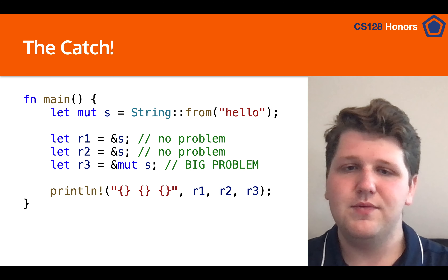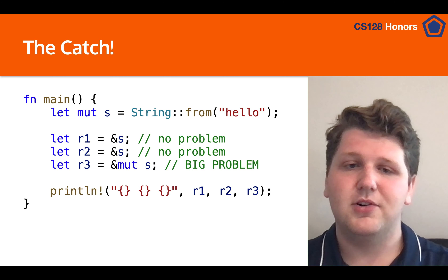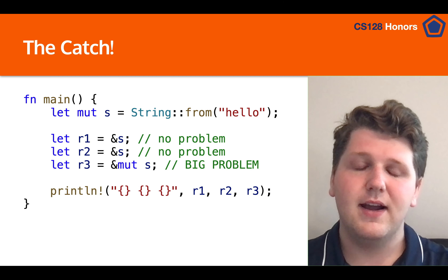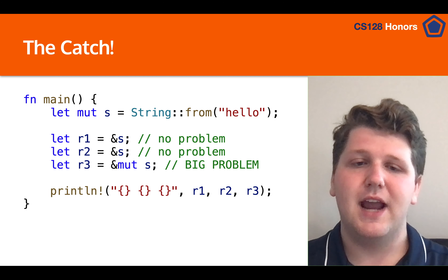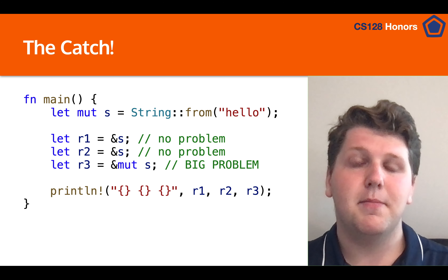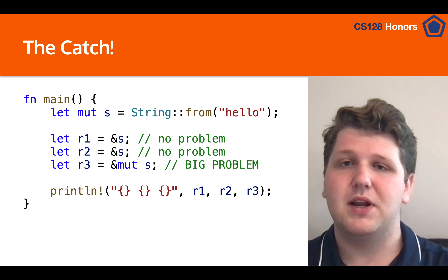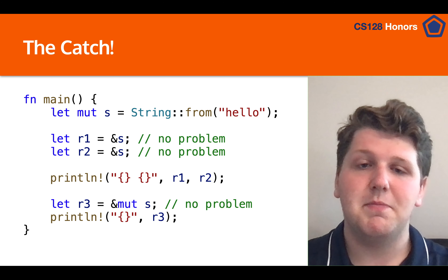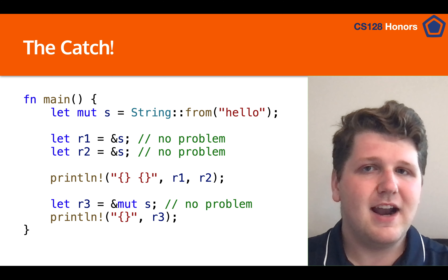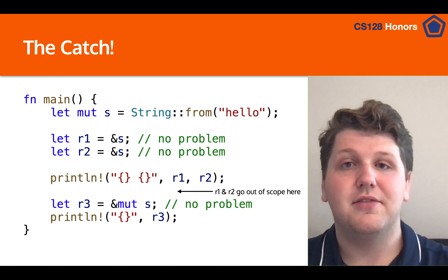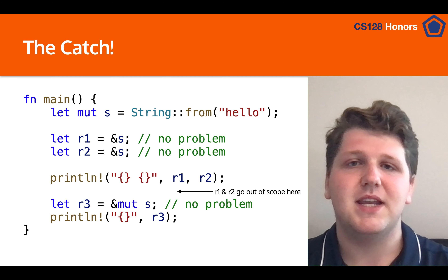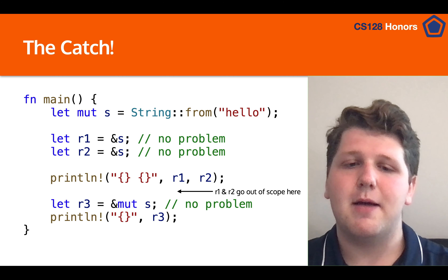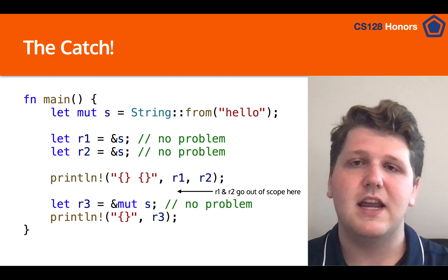For example, we have a string s with `String::from("hello")` and three variables r1, r2, and r3, which are all references to s. The first two work fine, but the third becomes a problem because we already have two immutable references and we're trying to make a mutable reference — you can't borrow mutably when borrowing immutably. However, if we move that mutable reference code below the print statement, it's no longer a problem. The Rust compiler notices that r1 and r2 are not being used after that line, so they go out of scope, and then r3 is able to make a mutable reference.